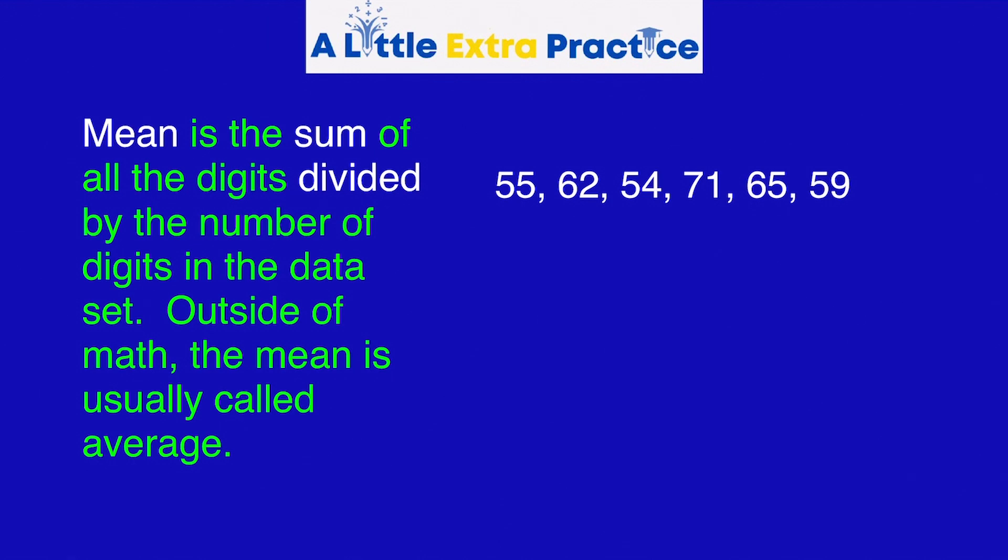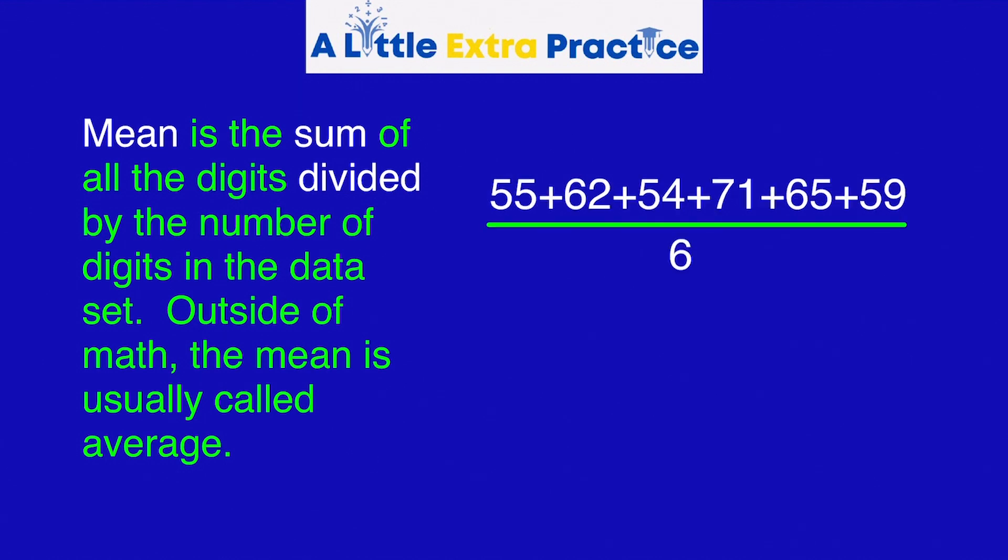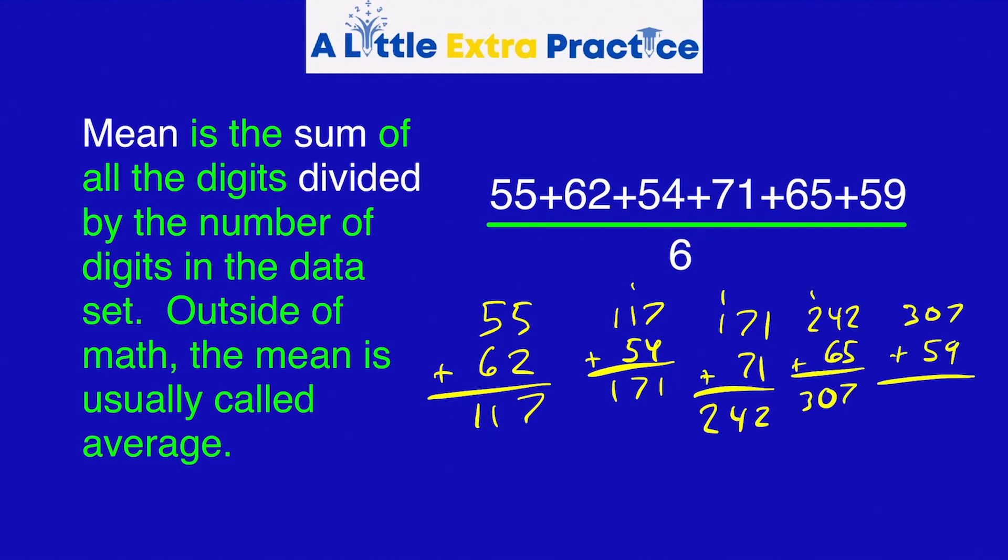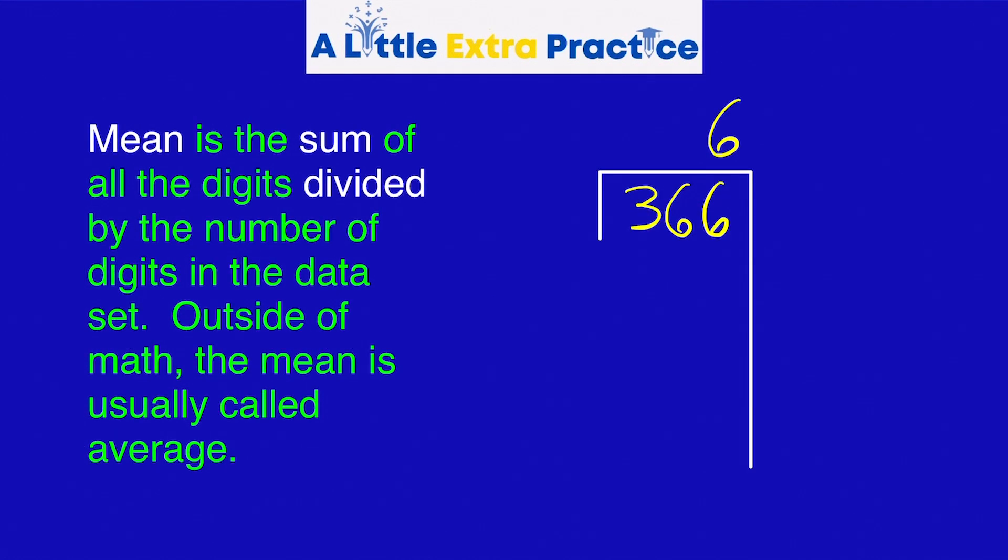So looking at this set of numbers, we have one, two, three, four, five, six. So we're going to add those six numbers and divide by six. So let me quickly add up the numbers. My sum of the digits was 366. The number of digits that I added was six.